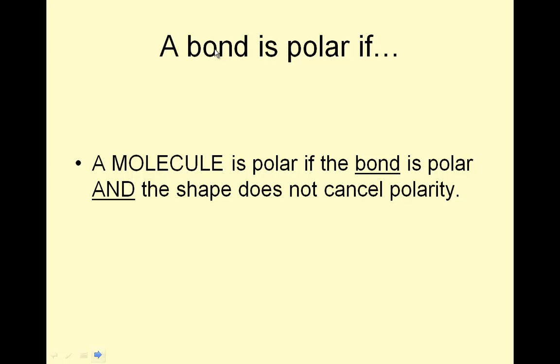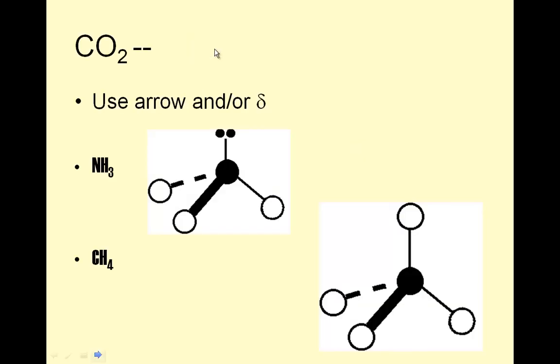A bond is polar if the electronegativity difference is 0.5 or more. Remember, that's the periodic table of electronegativity. A molecule is polar if the bond is polar, and the shape does not cancel the polarity. So let's look at the shapes to show you how that works.